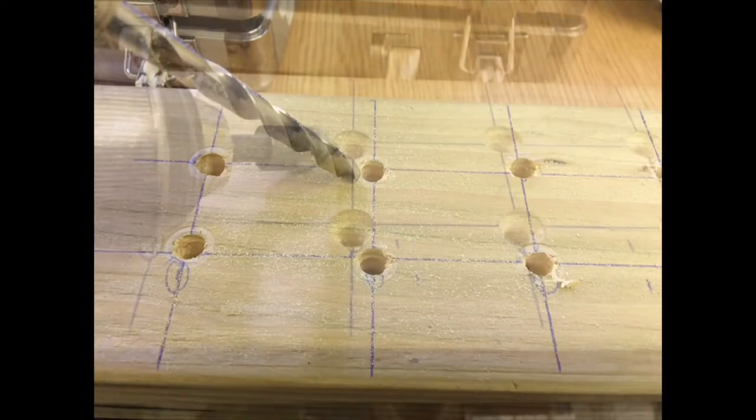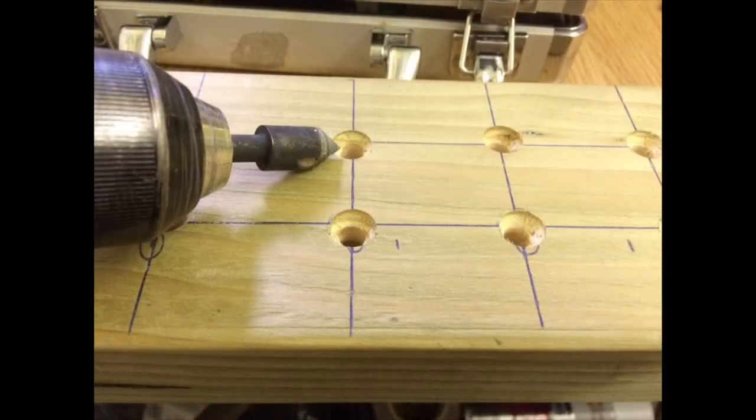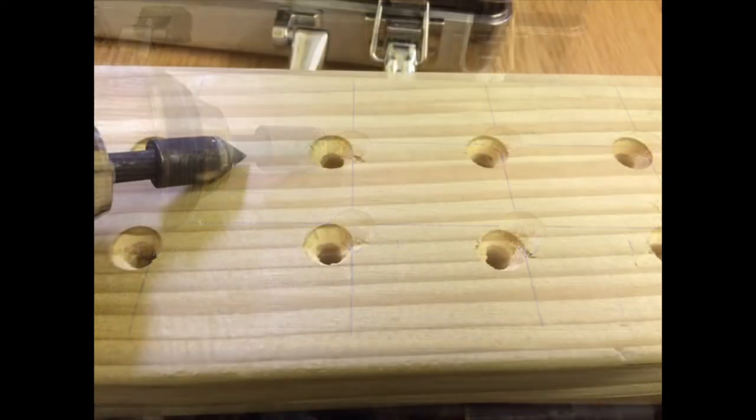So once I've drilled them I then get my countersink bit and do the top and the bottom of the holder, just take any rough edges off, give it another sand down, and there you go.